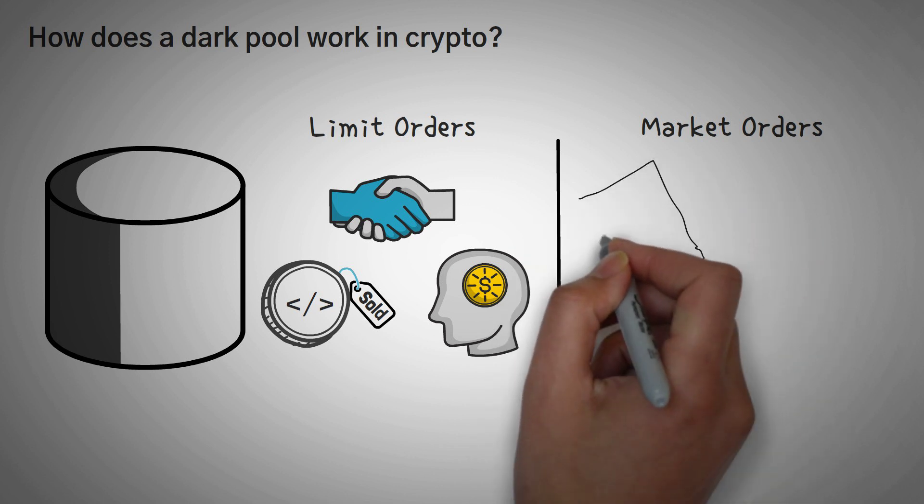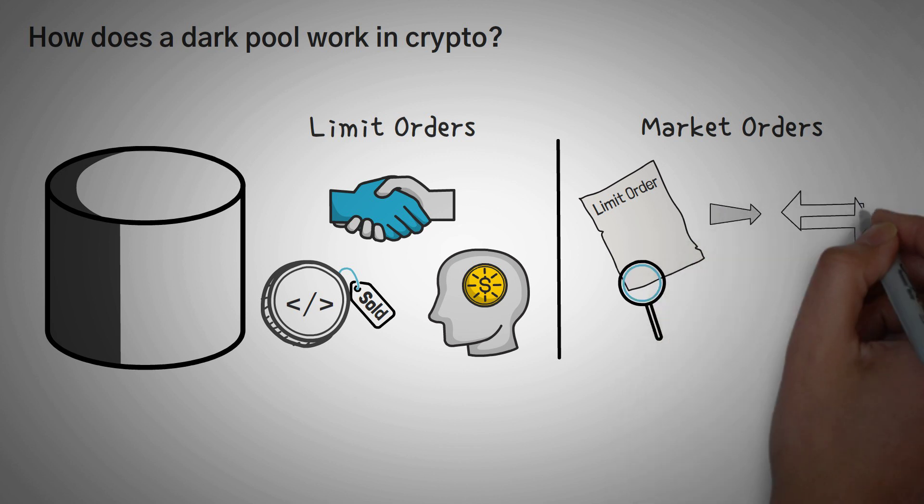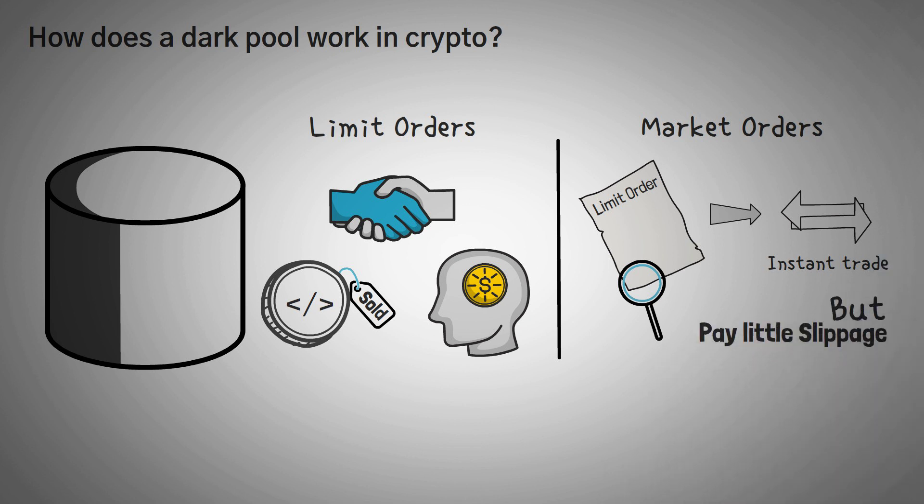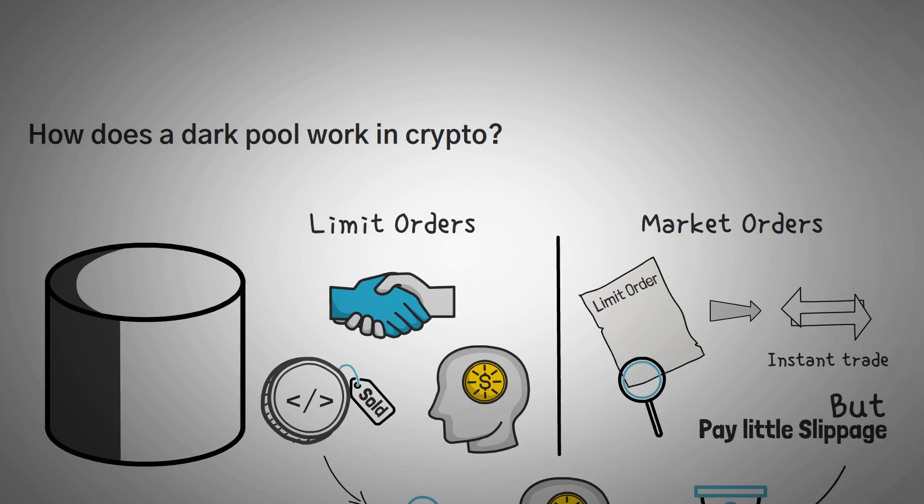Market orders on the other hand, look at all those other limit orders out there and then interact with the orders that are already out there to create instantaneous trades with just a little price difference. This way you get an instant trade, but you pay a little bit of slippage, which we went over earlier. Either way, you get to choose one variable. Limit orders allow you to pick the price. Market orders allow you to pick the time. Most dark pools use limit orders so that the seller can ensure they make a certain amount from each trade, even if the trade takes a month to complete.